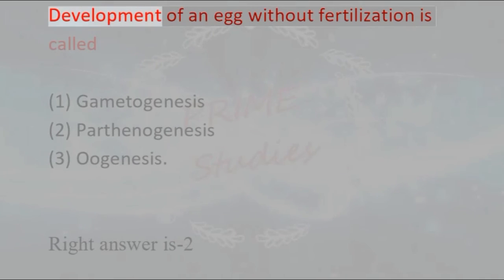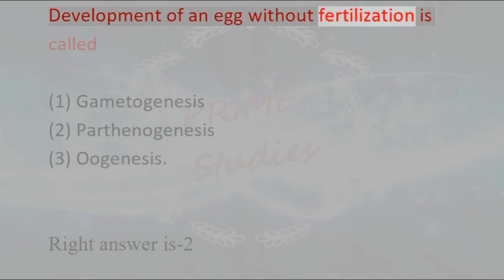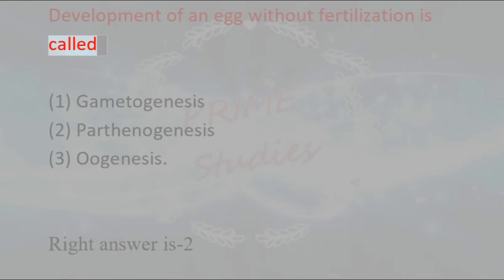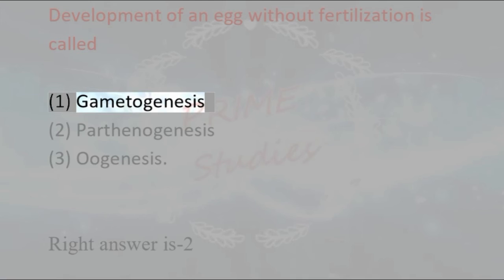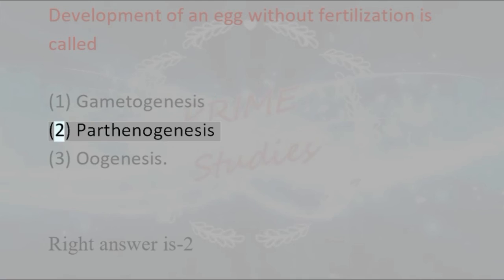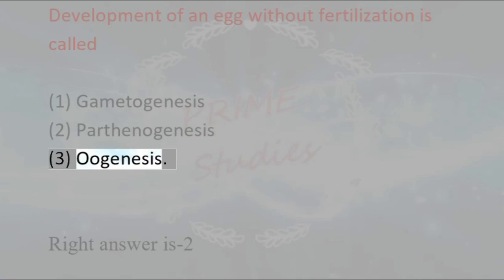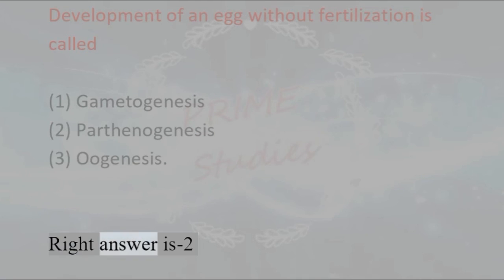Development of an egg without fertilization is called: 1. Gametogenesis, 2. Parthenogenesis, 3. Eugenesis. Right answer is 2 — Parthenogenesis.